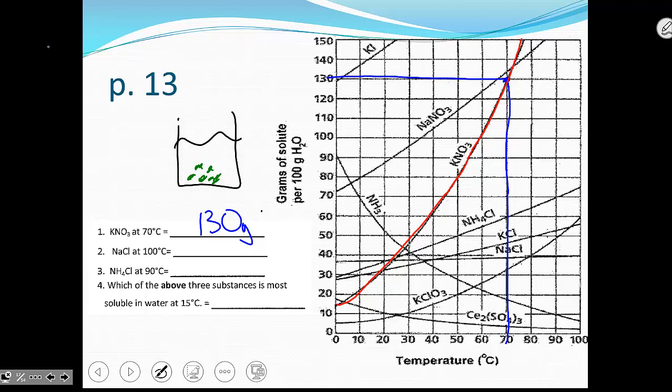If we were to double the amount of water, like hypothetically, in 200 milliliters of water, how much could you fit? You could fit twice as much. You have twice as many atoms of water to hold them separate from one another. So 260 grams could fit in 200 milliliters of water.